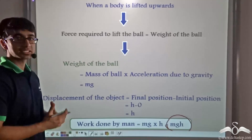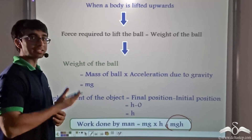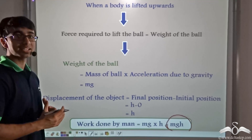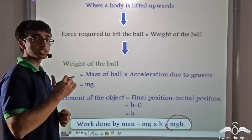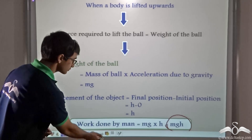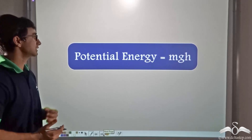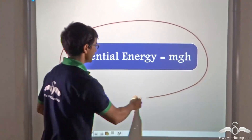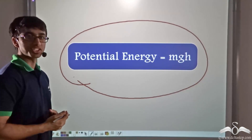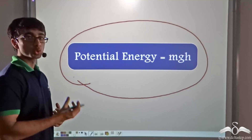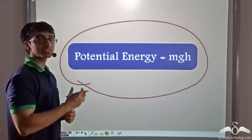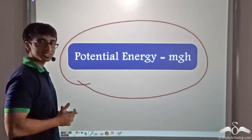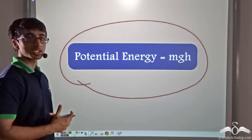The work done on lifting the ball is getting stored as potential energy of the ball, because potential energy is dependent on the particular height or position with respect to the earth. Thus the potential energy of the ball is also mgh. It is because of this potential energy that the ball is able to do work on the car and cause damage. Since height increases, potential energy increases and the damage done also increases.